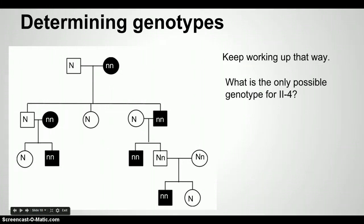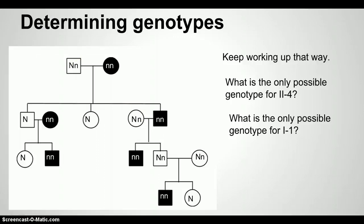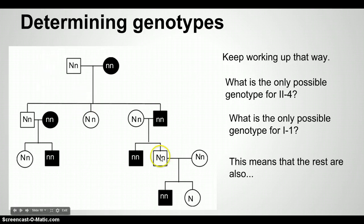What is the only possible genotype for individual 2-4, the only possible genotype for individual 1-1, which gives us the rest of the genotypes except for one.